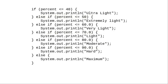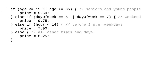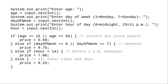Most of the time, when you have an if-else chain, your conditions will be testing the same variable. In this chain, all of the conditions are testing the variable percent. But there's no law that this has to be the case. As long as the if immediately follows an else, you can have a multi-way if-else that checks different variables — for example, a sequence that determines the price of a movie ticket depending on the customer's age as the first condition, the day of week as the second condition, and the hour of the day as the third condition. You might want to write a program with code like this and try various combinations of age, day, and hour to see if you can tell what the output will be before you run the program.